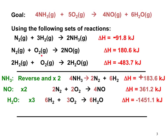Looking at the second thermochemical equation, we have N2 and O2 on the left-hand side — O2 is already on the correct side — and NO is on the product side, which matches our goal equation. So this equation does not need to be flipped and the sign of delta H is not changed. However, NO has a coefficient of 2 here but we need 4, so we need to multiply all coefficients and the delta H by two. After multiplying through by two, we get the appropriate values and the corresponding new delta H.